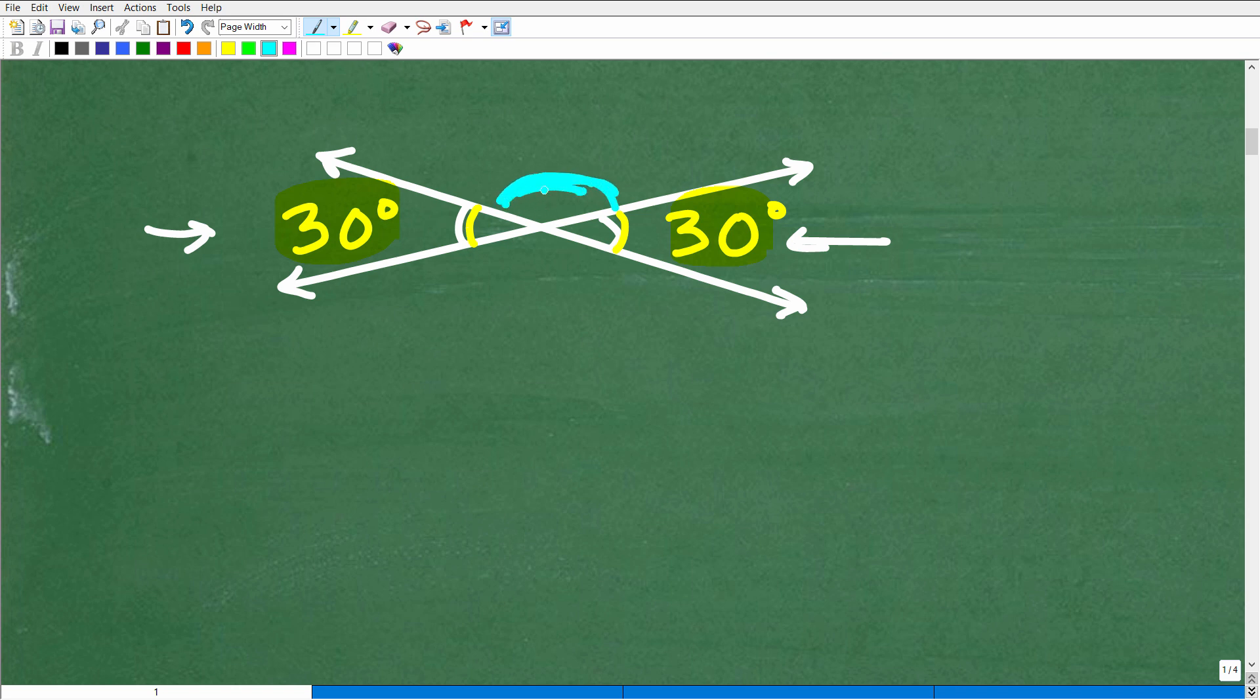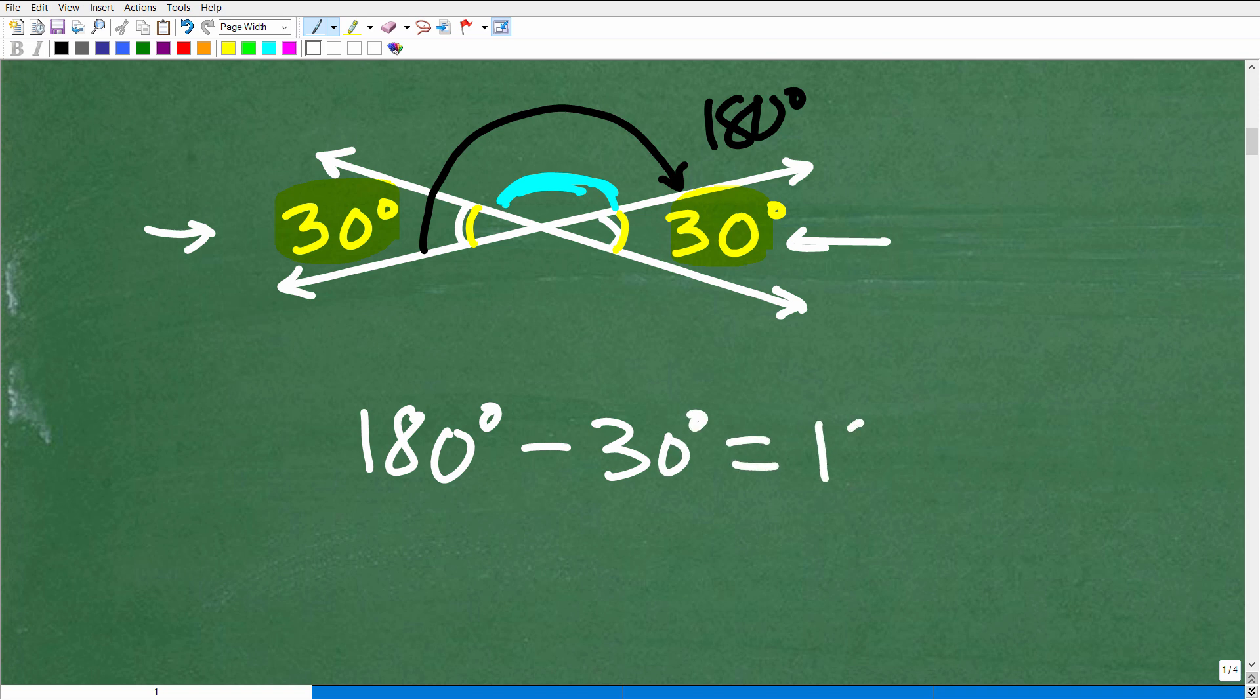How can we get this angle? If this is 30 degrees, well from here to here is how many degrees? How many degrees are in a straight line? That would be 180 degrees. So to get this angle, if this is 30, all we have to do is take that 180 degrees minus 30 degrees.